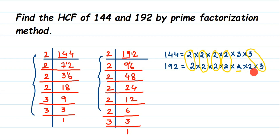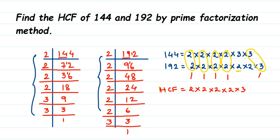From each circled pair, we take one factor and multiply them together. So HCF = 2 × 2 × 2 × 2 × 3. Calculating: 2×2=4, 4×2=8, 8×2=16, 16×3=48. Therefore, the HCF of 144 and 192 is 48.